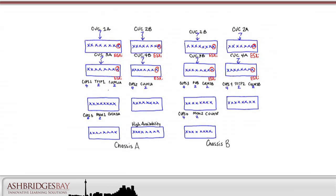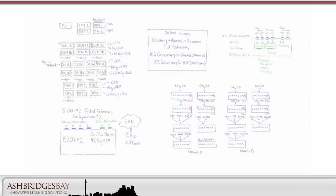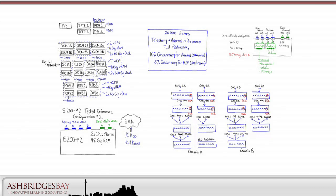Looking at our totals, we're fine with this distribution. We've maximized our redundancy, mixed publishers and subscribers, and have not oversubscribed our cores. This is what our overall design looks like so far.